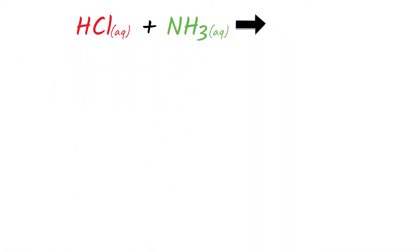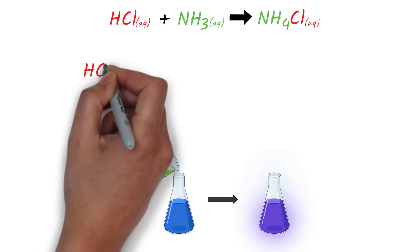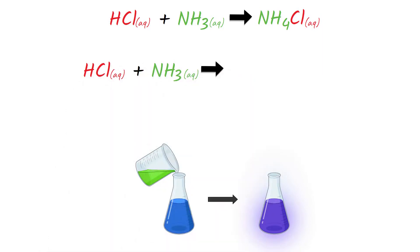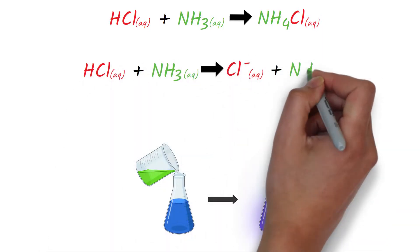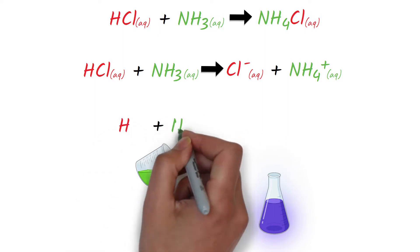We can look at what happens when a weak base, ammonia, reacts with hydrochloric acid. Again, we can write a molecular equation and then a net ionic equation. The only spectator ion this time is chloride. What is left is the ammonium ion, which is the conjugate weak acid of ammonia.